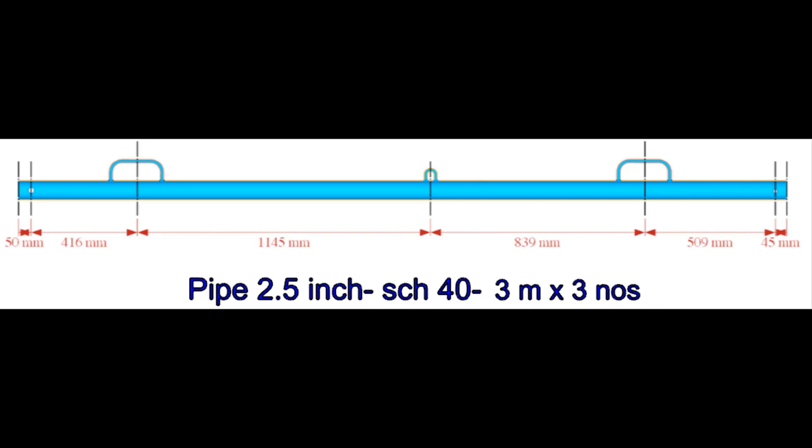The diameter of the holes in the pipe is 24 millimeters. Drill the holes on the pipe. Fit up and weld the handles and the hook on the pipe.